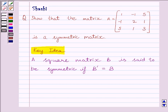Let us now start with the solution. We know A is equal to matrix 1, -1, 5, -1, 2, 1, 5, 1, 3 as given in the question.